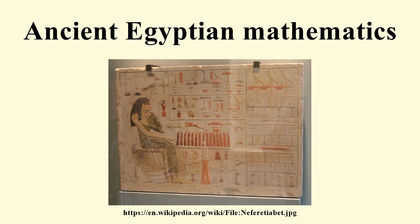Further evidence of the use of the base-10 number system can be found on the Narmer mace head, which depicts offerings of 400,000 oxen, 1,422,000 goats, and 120,000 prisoners. The evidence of the use of mathematics in the Old Kingdom is scarce, but can be deduced from inscriptions on a wall near a mastaba in Medum, which gives guidelines for the slope of the mastaba. The lines in the diagram are spaced at a distance of one cubit and show the use of that unit of measurement.